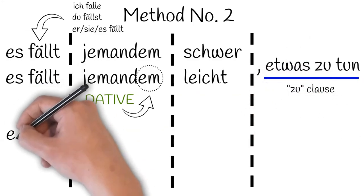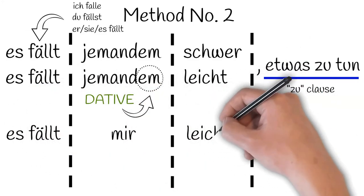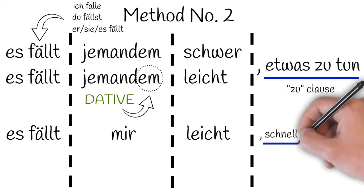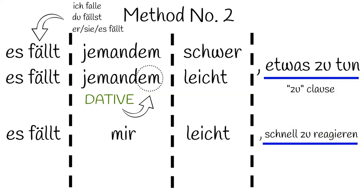Let's look at some examples then. Es fällt mir leicht schnell zu reagieren. It's easy for me, or it comes easy to me to react quickly. Notice that mir is in the dative case, and we've maintained everything else exactly as the model. Es fällt remains es fällt, because the subject's not going to change with this construction, and the unchangeable zu clause at the end, of course, will not be conjugated.